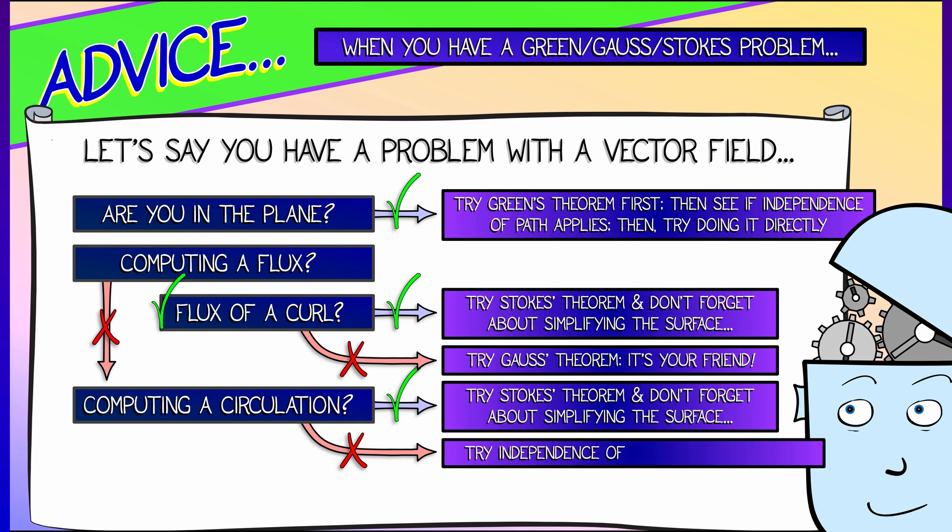If you're not computing a circulation, if you're just doing the integral of a vector field along a path, some kind of work problem, something like that, try using the independence of path theorem. Everyone always forgets about that one. Or in extremis, try doing it directly.